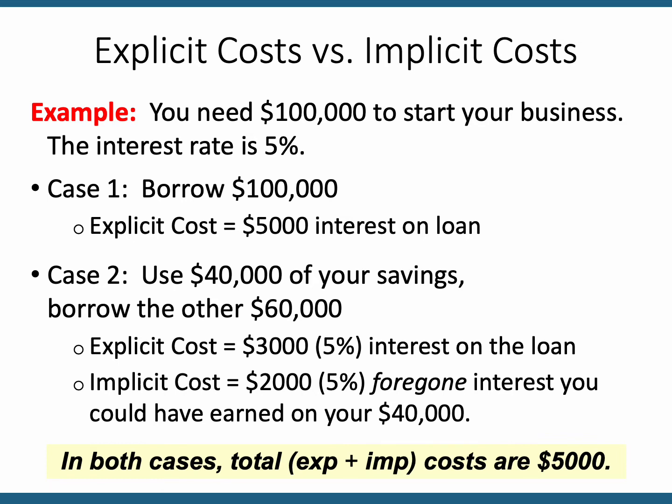Suppose you're going to start a business and you need $100,000 in startup funding. You have two options: you can borrow the money with a small business loan from a bank at 5% interest. That 5% interest expense is an explicit cost. Suppose you actually buy a facility for $100,000 — you possess that asset worth $100,000, so the $100,000 is not a cost. It's the $5,000 interest on the loan that you're paying. That is an explicit cost.